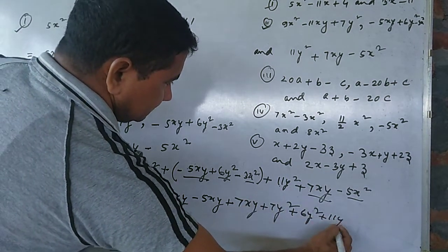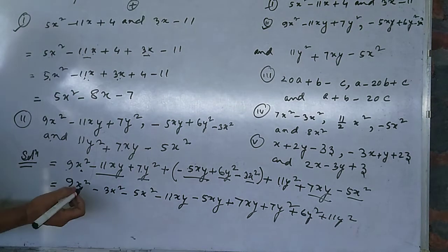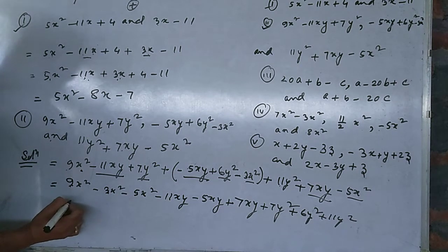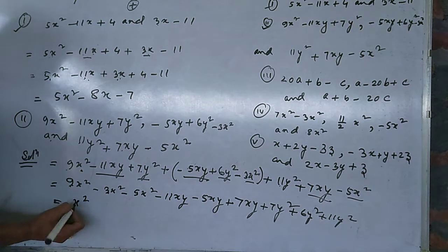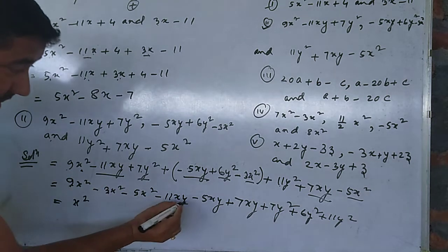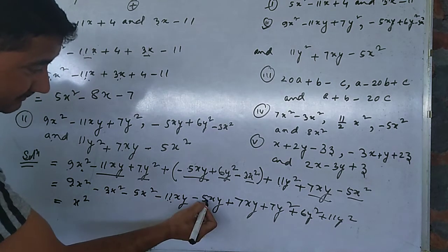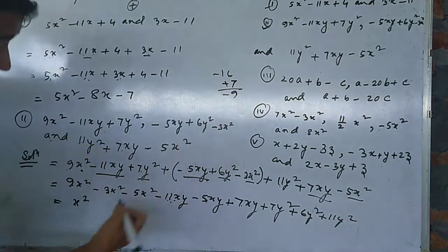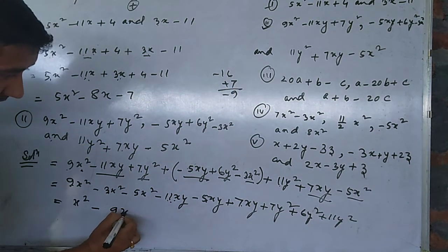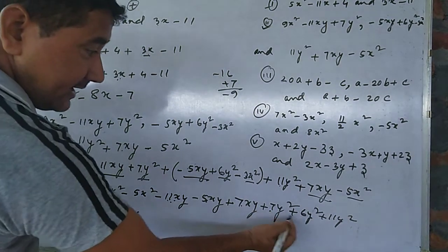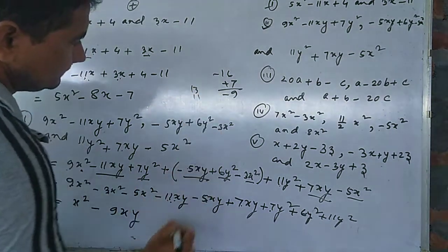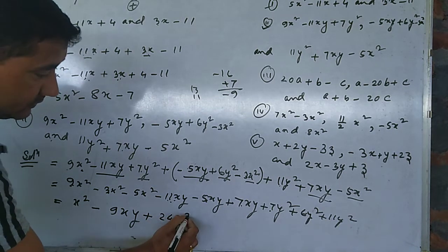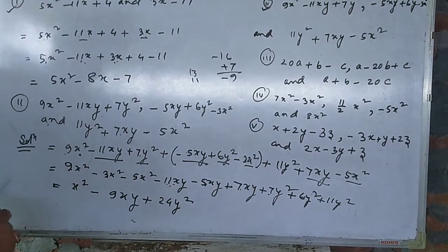Now this one: 9 minus 3 is 6, 6 minus 5 is 1. We write only x². Minus 11 plus 5 is minus 6, plus 7 is plus xy. And 7 plus 6 is 13, plus 11 is 24y².